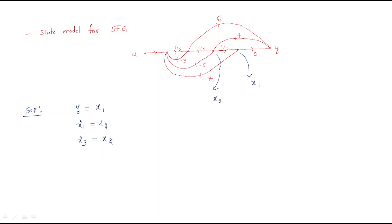There are three state variables: x1, x2, and x3. The remaining part becomes x3 dot. In order to reach x1 from y, you should place nodes as x1, then x2, then x3, then x3 dot. This is the recognition of the nodes in the signal flow graph.